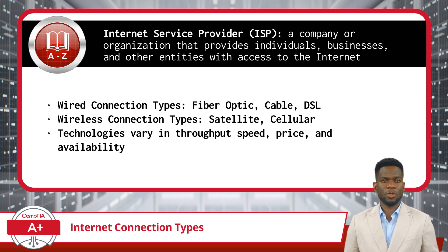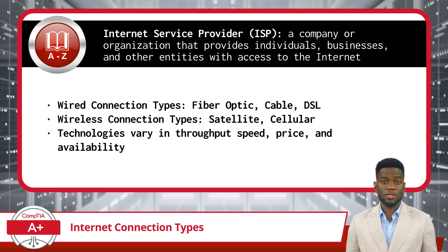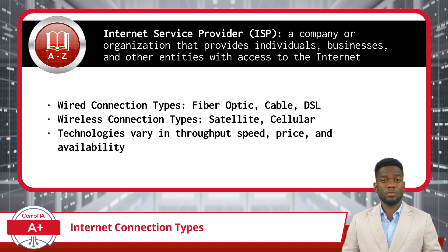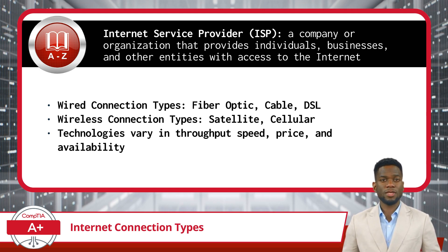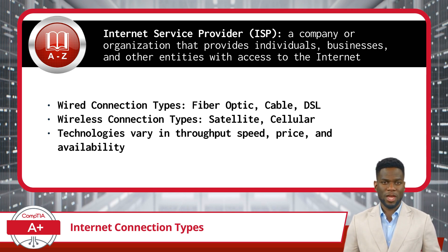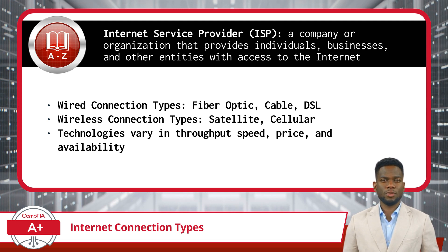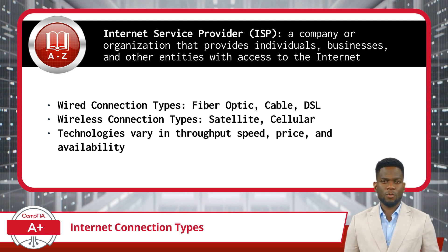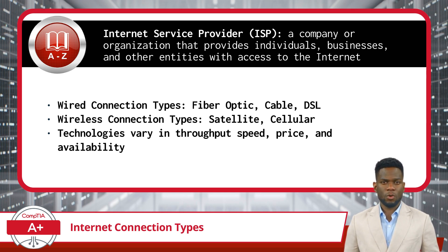Wireless technologies include satellite and cellular. With each option, there are typically a range of subscription plans that vary in terms of throughput speeds and pricing, designed to meet the needs of different users. Another consideration is location — not all connection types are available in all areas. Now that we know what an ISP is, let's discuss each of the available connection types, one at a time.